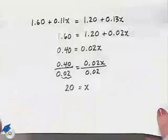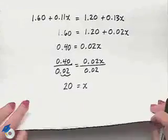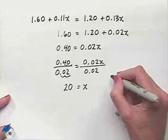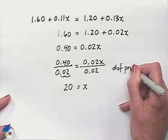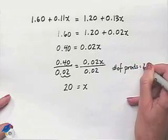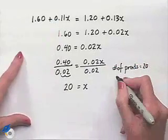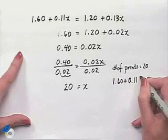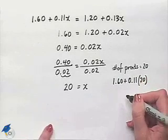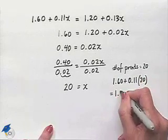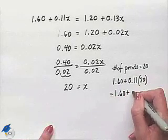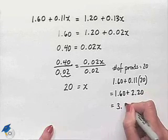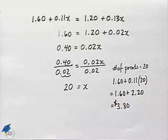Now, there was a second point that we were trying to make in the problem, and that had to do with the amount that would be spent at each Photoshop. We can take the number of prints, which is equal to 20, and we can take one of the expressions, for instance, the 1.60 plus .11 times our X value of 20, in order to evaluate the amount spent. That would be 1.60 plus, multiplying here gives us 2.20, and we come up with a total of $3.80 as the amount that would be spent.